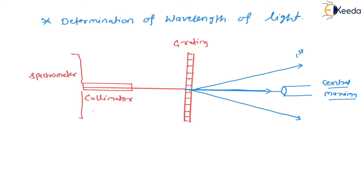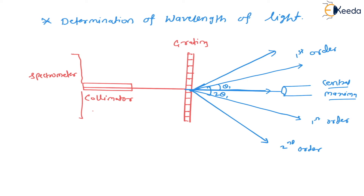Here is first order on one side, and this is also first order on the other side. The angle between these first order spectra — let that angle be theta 1 — so the whole angle is twice theta 1. In the same way we can draw second order, and the whole angle for second order will be twice theta 2.